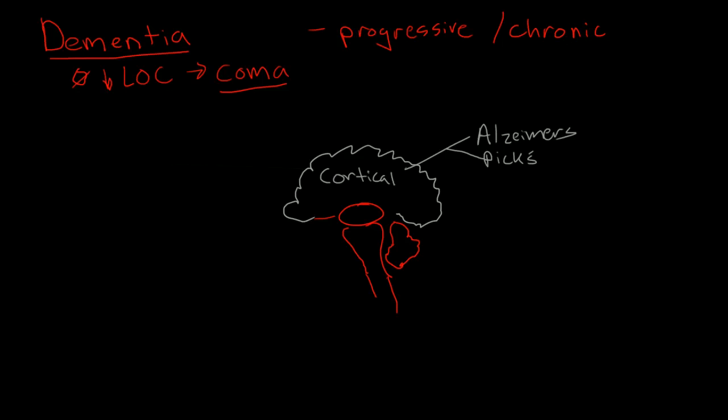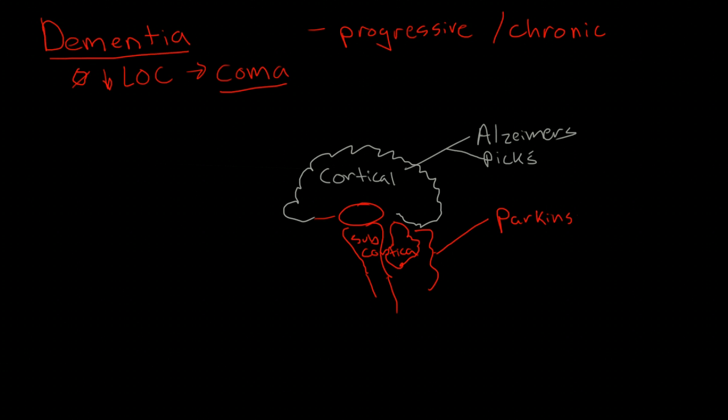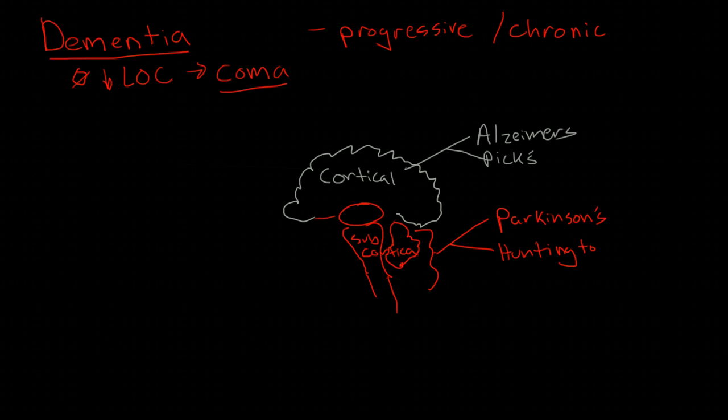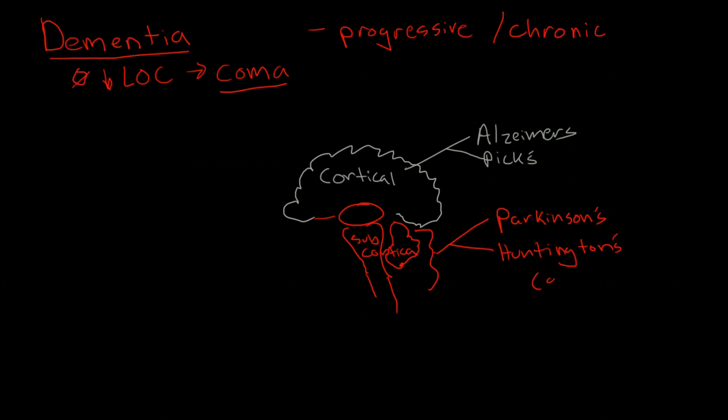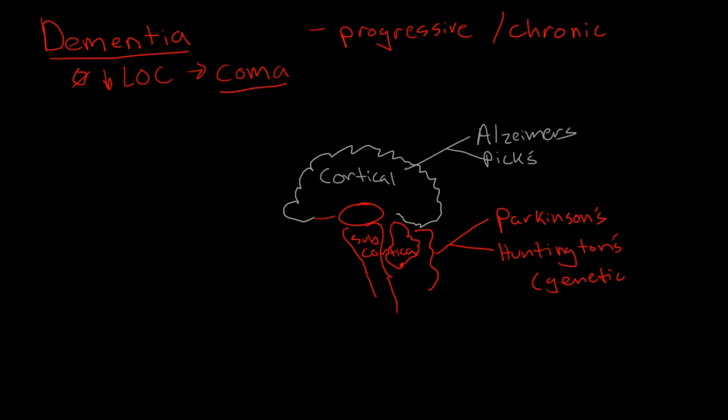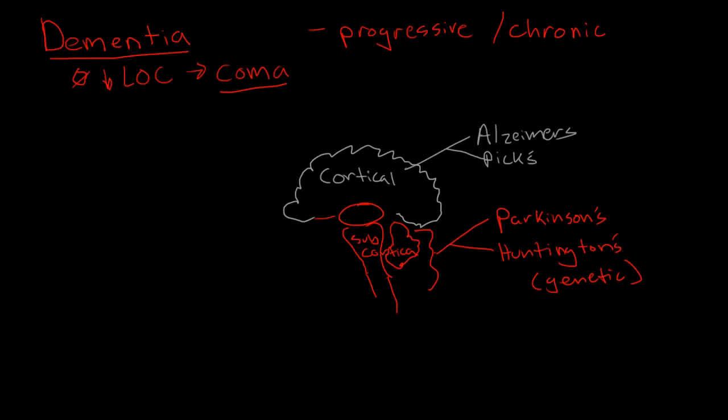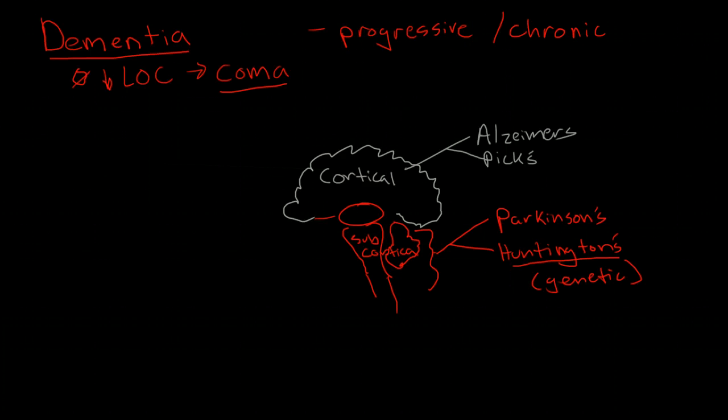Then there are the subcortical dementias - anything from below the cortex. And the two major types that we think about here are Parkinson's dementia and Huntington's disease. Parkinson's is much more common than Huntington's. Huntington's is a genetic condition that you're born with, but the disease doesn't manifest until later in life. If someone happens to write about it on the blog, that would be excellent.